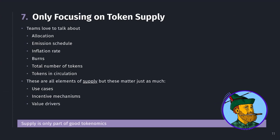Mistake number seven is only focusing on token supply. Most of the time when you hear someone talking about tokenomics, they're talking about allocation, emissions, inflation rates, burns, total supply, circulating supply. These are all elements of tokenomics, but they're all aspects of supply. The demand side matters just as much — use cases, incentive mechanisms, value drivers. Do not neglect the demand side of your tokenomics just to focus on supply. Making your token as scarce as possible alone cannot help your token. You need both strong supply design and strong use cases, mechanisms, and value drivers on the demand side.